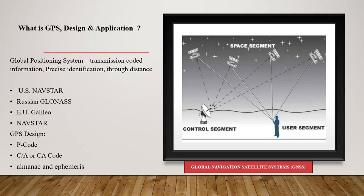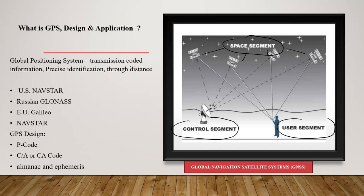Before going into detail, I would like to give you an idea of what the GPS system or Global Positioning System is. GPS is a network of different satellites. You need to understand this in three different concepts: the space segment, the control segment, and the user segment. The space segment consists of multiple satellites. GPS continuously transmits different codes to the control segment and the user segment. The user segment works through either a mobile navigation system, GPS device, or any tracking device.